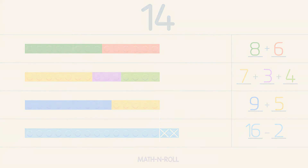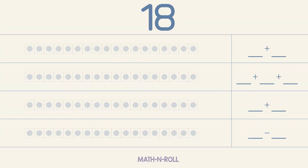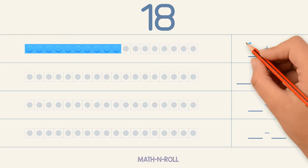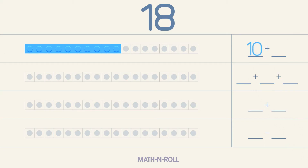Let's do another example. We can add and subtract in different ways to make 18. We can take any number less than 18, like 10. To make 18, we have to add 8 to 10. So 10 plus 8 equals 18.